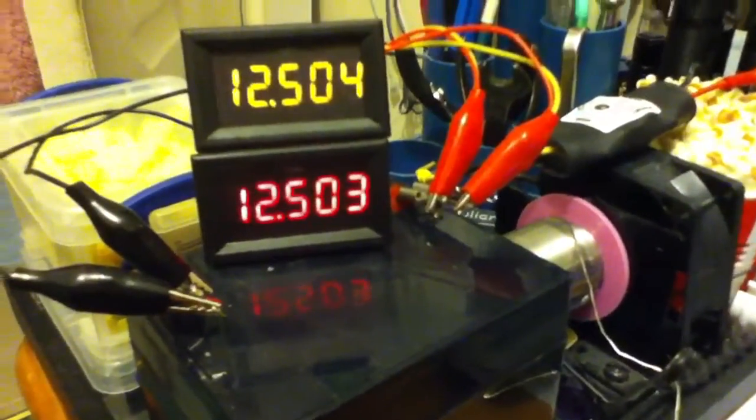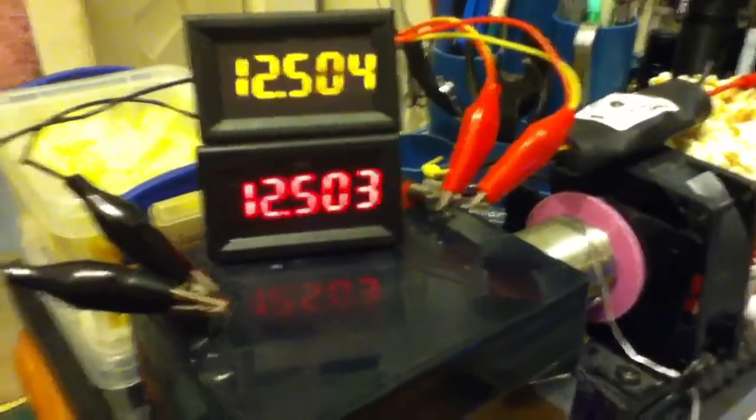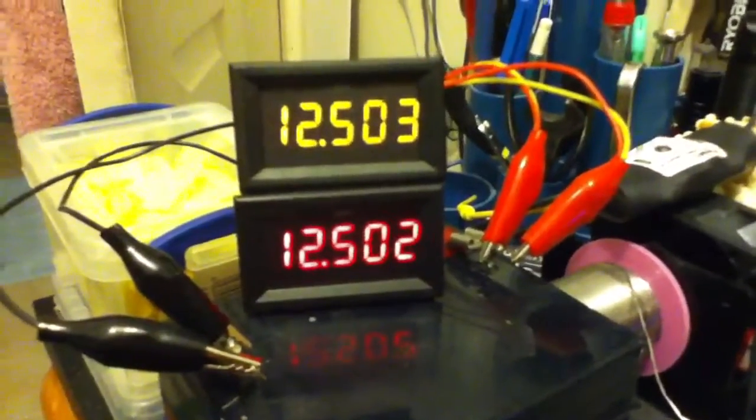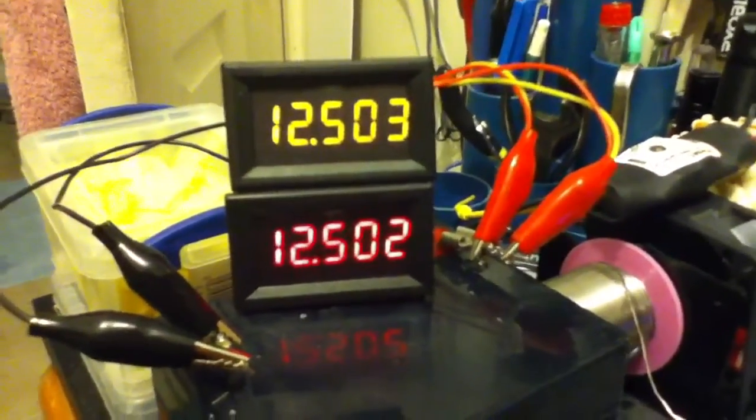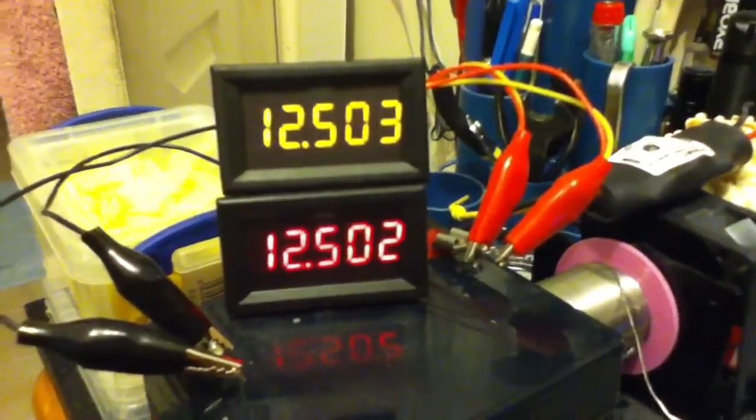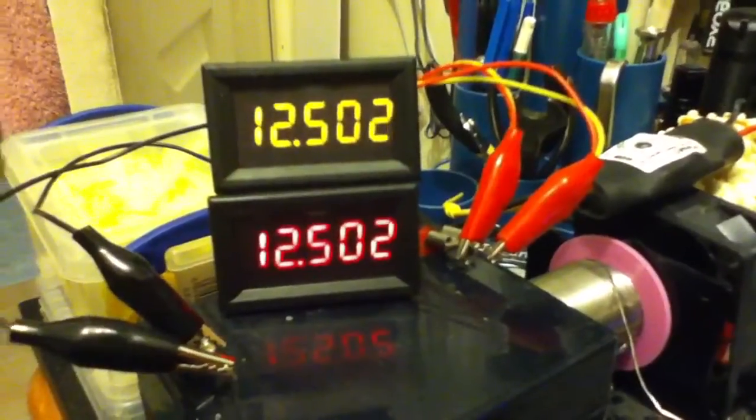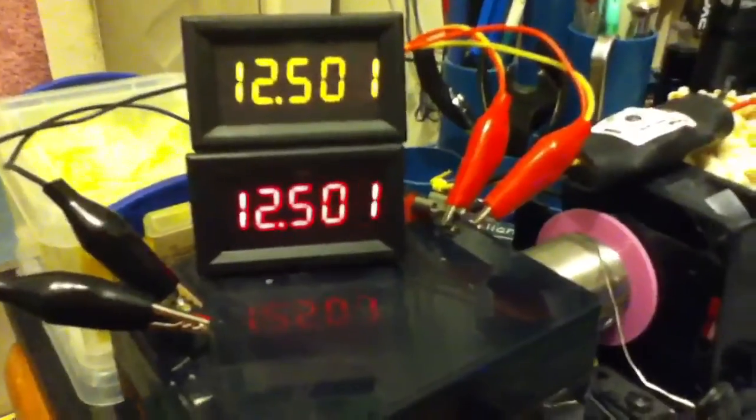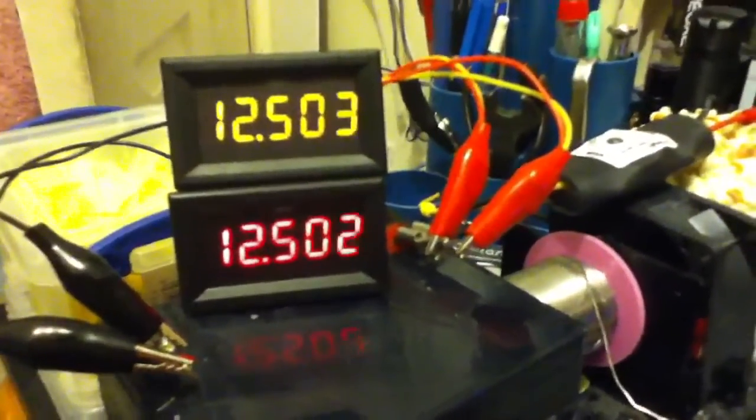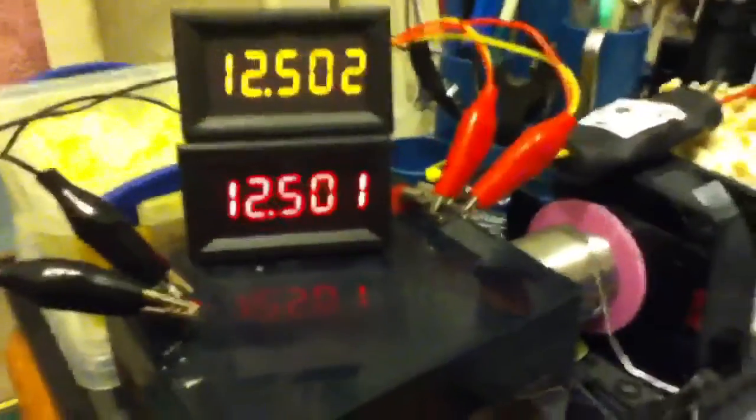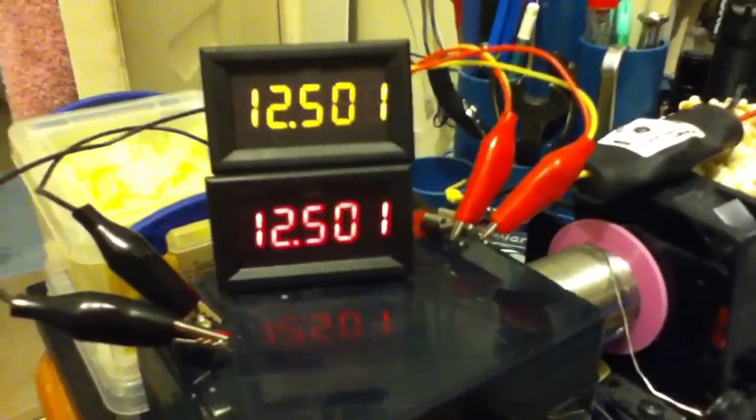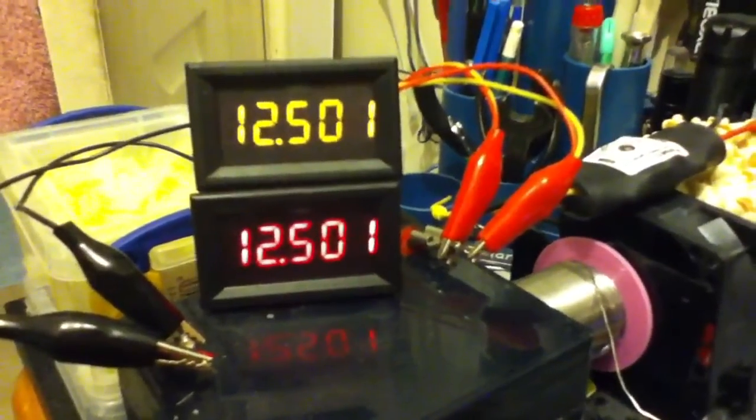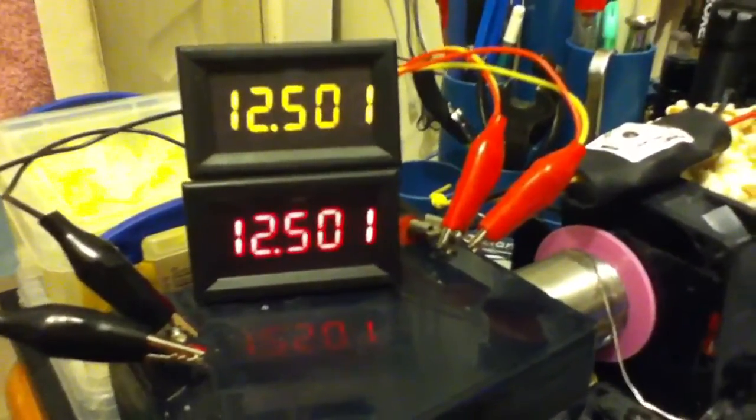I found these three-digit or three decimal place meters on eBay and bought the yellow one initially for about six pounds. And then I thought, how do I know that it's precise? The listing on eBay made a big play of putting it up against a professional seven decimal place meter, certainly gave the impression that it was going to be accurate.